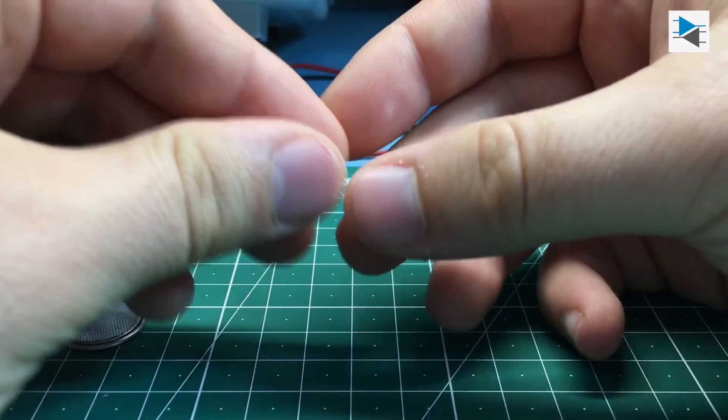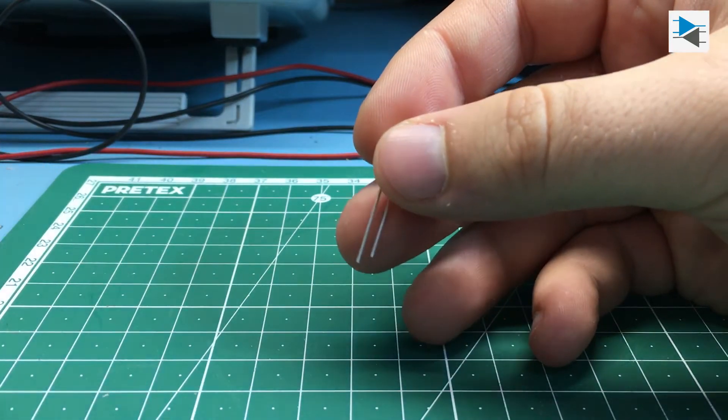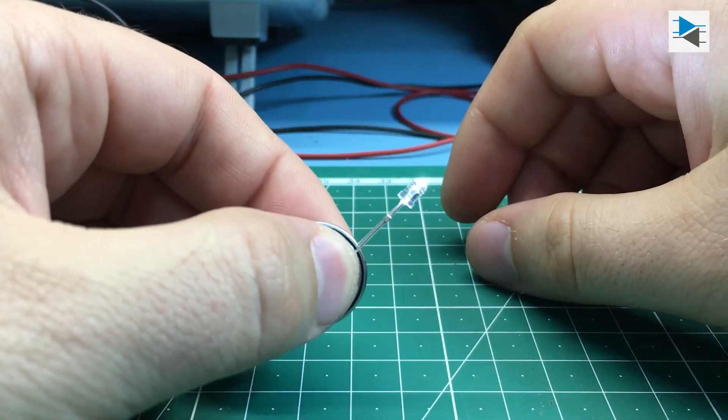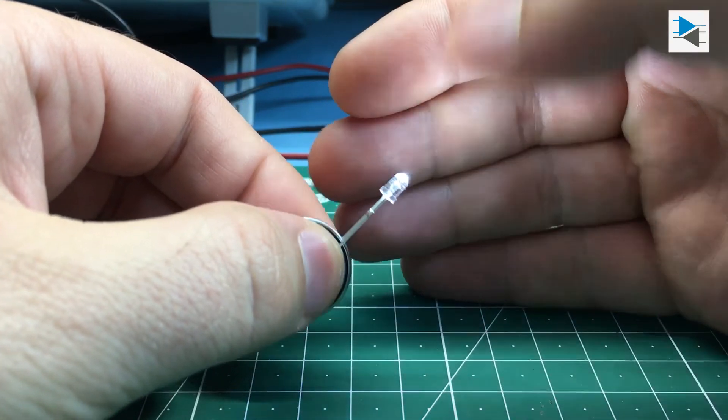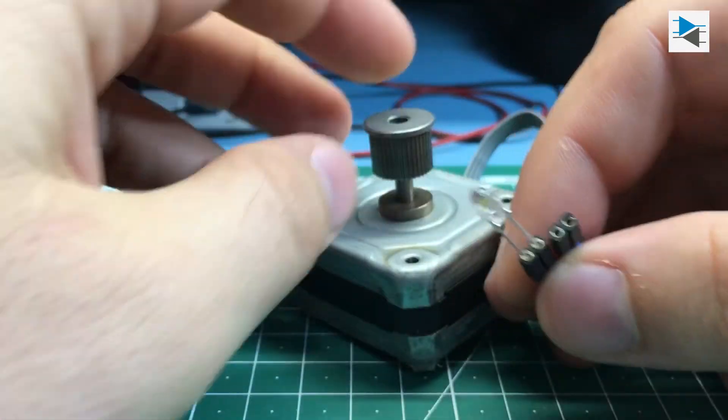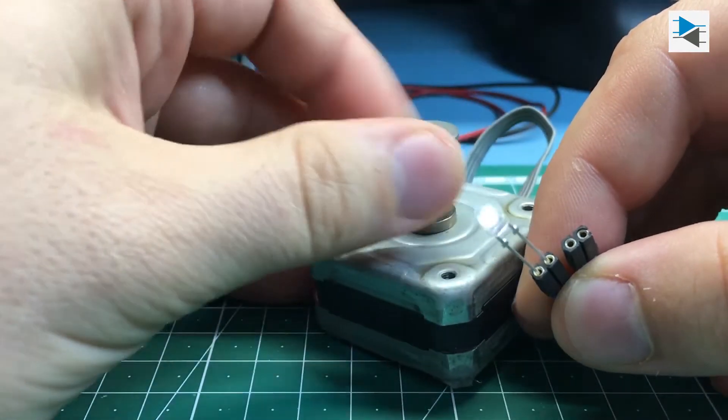I happen to have an LED right here. First up, a coin cell. This baby delivers about 3 volts or so and what do you know, it works. Next, let's try out a stepper motor. Just fiddle the leads in and give it a spin. What do you know, it flashes. Nice.